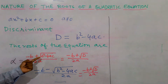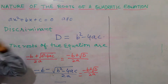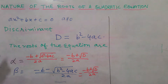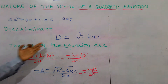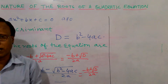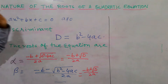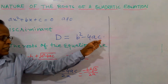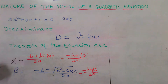This term b² - 4ac is called the discriminant. We assume discriminant D = b² - 4ac. This discriminant D decides the nature of the roots of the quadratic equation ax² + bx + c = 0.